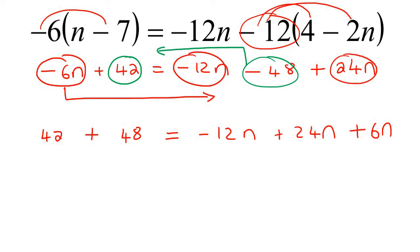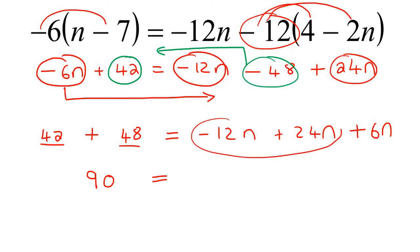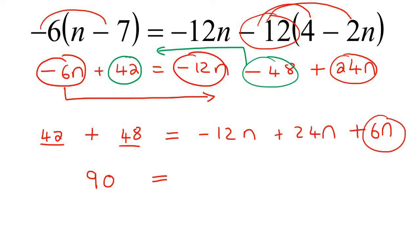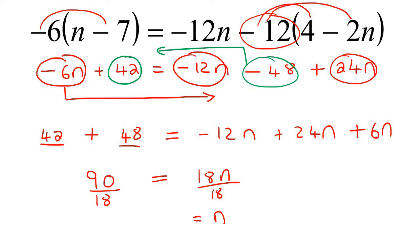Now it's simply a case of combining. So 42 plus 48 is 90. And then on the right-hand side, we combine these all together: minus 12 plus 24 is 12, plus 6 is 18. Then to get n by itself, we divide by 18, and you also have to do the same on the other side. So you end up with 90 divided by 18, which is 5.